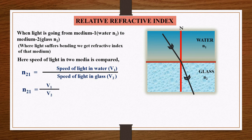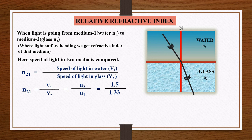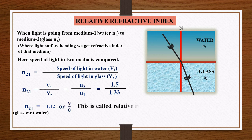The formula for n21, meaning refractive index of the second medium (glass) with respect to the first medium (water), is given by speed of light in water v1 divided by speed of light in glass v2. So n21 equals v1 divided by v2, which can also be written as n2 divided by n1, equal to 1.5 divided by 1.33. Finally, the refractive index of glass with respect to water, n21, equals 1.12 or 9/8. This is called the relative refractive index.